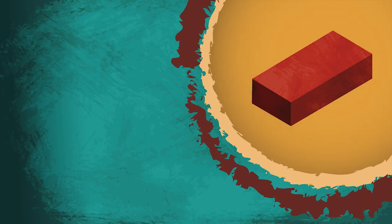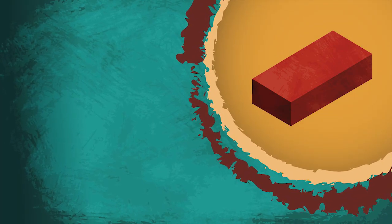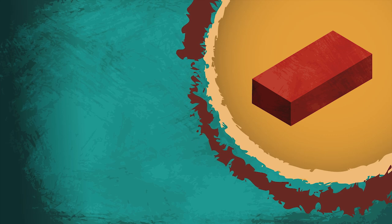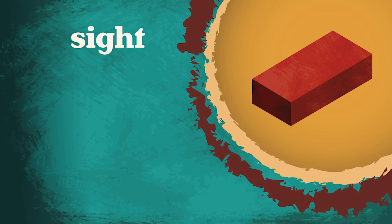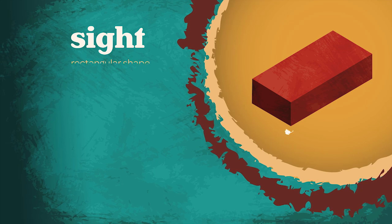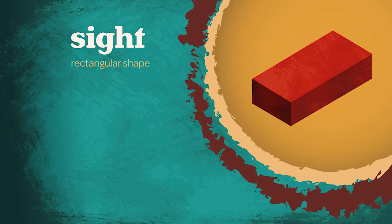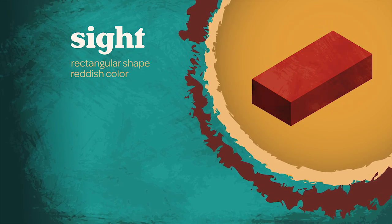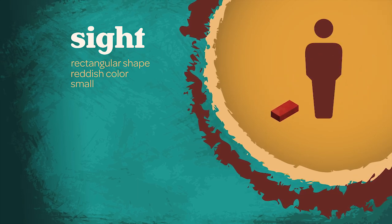Take this object for example. You can use your sense of sight to see its shape and color. It has a rectangular shape and a reddish color. You can also see the size of the object.